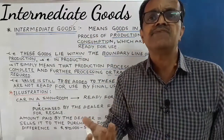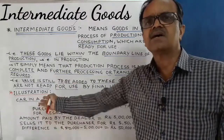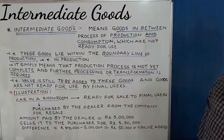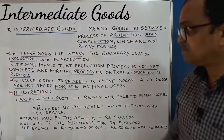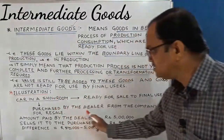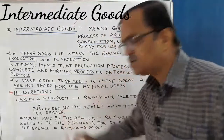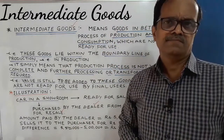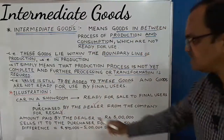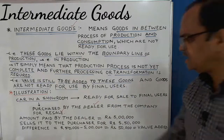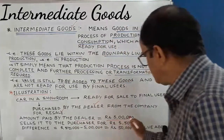Let us take an example. A car is in the showroom and this car is for sale. This car is purchased by the dealer. The dealer has purchased it not for consumption or investment. Let the amount paid by the dealer be 5 lakh rupees.